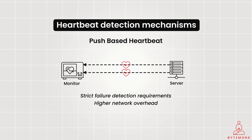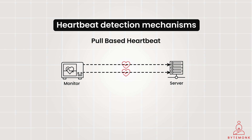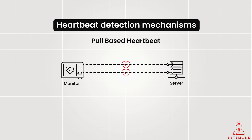In a pull-based model, a central monitoring system or a designated node periodically sends 'are you alive?' requests to other nodes. The nodes respond with a heartbeat message to confirm their availability. In this model, the nodes don't send unsolicited messages, reducing overall traffic. The central entity has a clear overview of system health. However, it may cause lower failure detection speed, since failure detection relies on the polling interval of the central monitor, meaning issues might be detected with a slight delay.